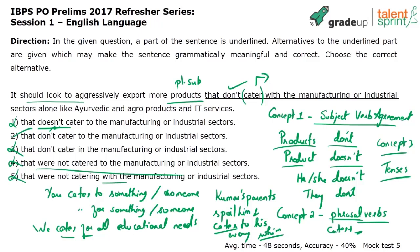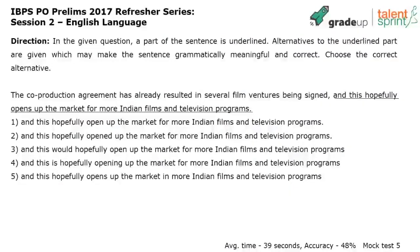So how many concepts did we look at? Concept one — subject-verb agreement. Concept two — phrasal verbs. Concept three — tenses. I don't need a past tense here. What I'm basically saying is for a question pattern like this, look at the concepts you need to be familiar with: tenses, subject-verb agreement, phrasal verbs. If I'm thorough with these basic concepts, I will not choose the wrong answer option.